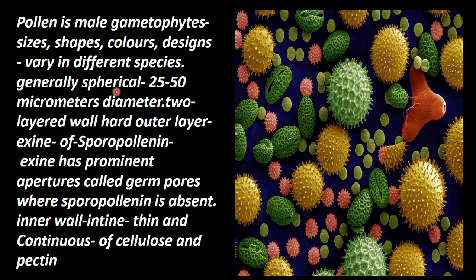Generally it is spherical, 25 to 50 micrometers in diameter. It has a two-layered wall. The outer wall is a hard outer layer called exine, and in this exine wall you have sporopollenin.